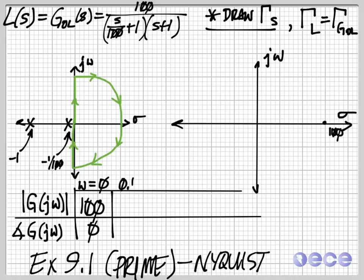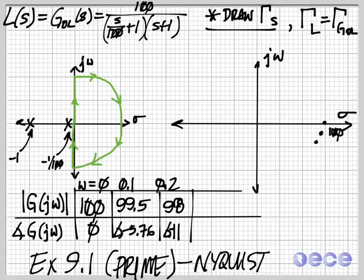Now we're going to pick a couple of other points. If we pick 0.1, evaluating this gives us a magnitude 99.5 and an angle minus 5.76. So that's about right there. For 0.2, 98 and minus 11. For 0.3, 96 and minus 16.